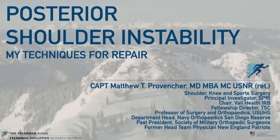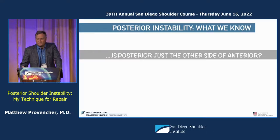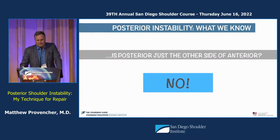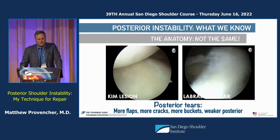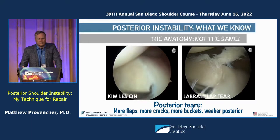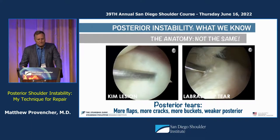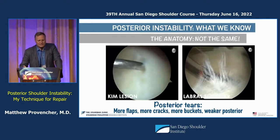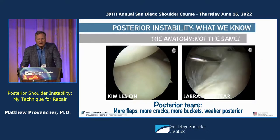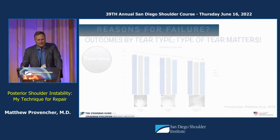I'm going to talk about my technique for repairing posterior shoulder instability. Is the posterior just the other side of anterior? The reality is it's not. We have to think about posterior instability as much different. The posterior labrum behaves much differently — there are more flaps, more cracks, more buckets, and this tissue is just weaker. This type of appearance does not generally happen in anterior standard Bankart injuries.